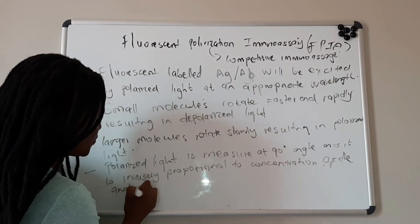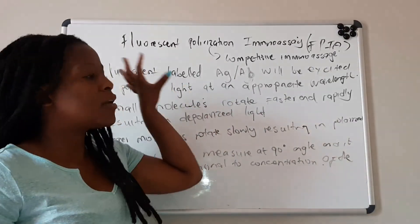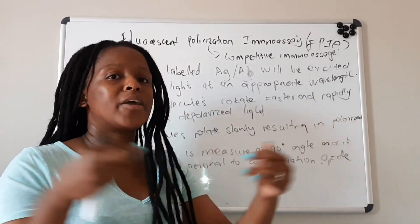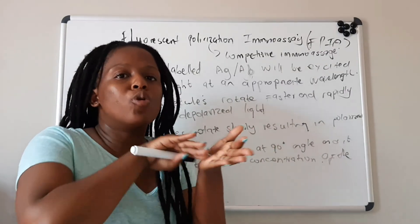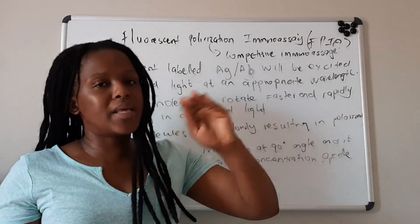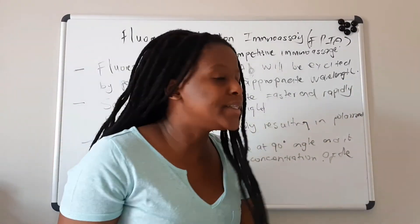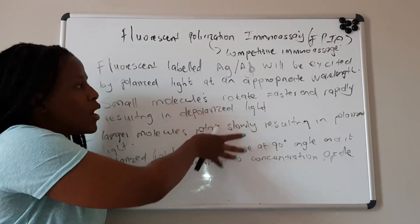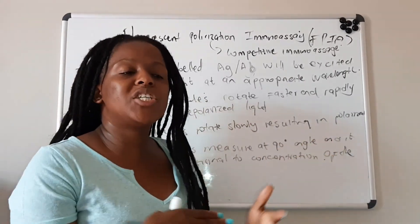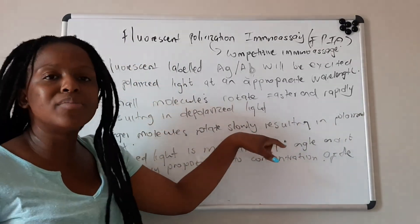How do we get this polarized light? Usually the polarized light is obtained when normal white light passes through special filters, which polarize the light. The light that reaches the cuvette is then polarized. Depending on whether the molecules are smaller or larger, the smaller ones will rotate rapidly and change the plane of that polarized light — that is why we say the light becomes depolarized.